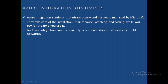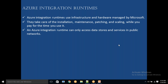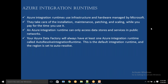Azure integration runtime can access only the storages and databases available in the public network — meaning the cloud. The cloud is a public network; whoever has access to the cloud can access it. For example, the Microsoft team can access the cloud — that's why it's a public network. But whatever data you have in your computer, nobody can access — that's a private network.